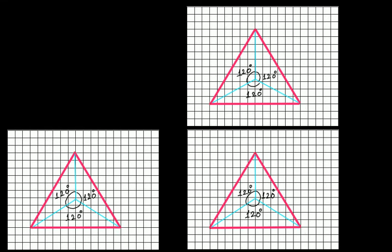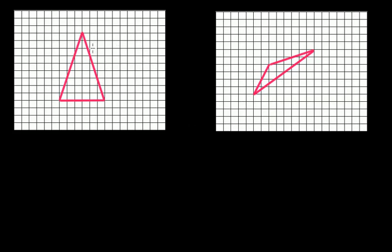Now let's quickly talk about the other two triangle types. Here we have an isosceles triangle and a scalene triangle. In an isosceles triangle with vertices A, B, and C, two sides are equal to each other but the third side is not. In the case of the equilateral triangle we saw that rotating by 120 degrees gave rotational symmetry because all three sides were equal to each other — but what about in this case?